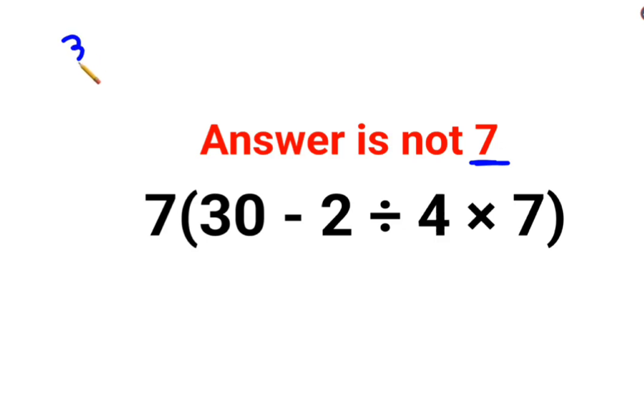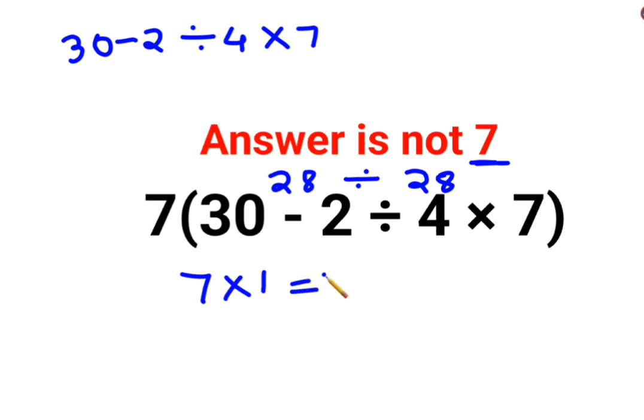So 30 minus 2 divided by 4 multiplied by 7. So here what happens is, a lot of people think that first we can do this: 30 minus 2 is 28, divided by 4 into 7 is 28. So this gets you 7 into 1, which gets you 7. Now that is absolutely incorrect.